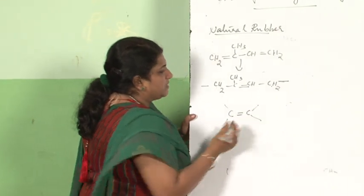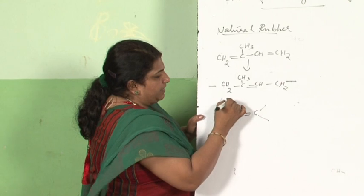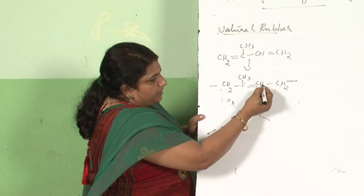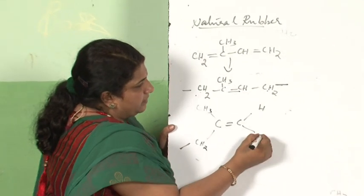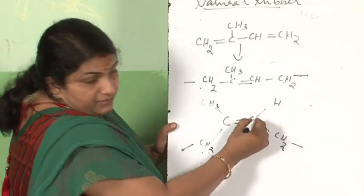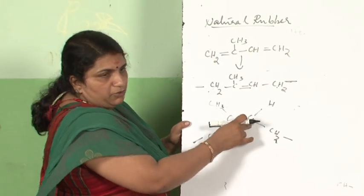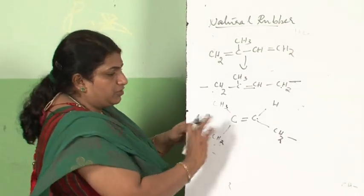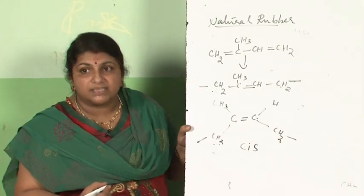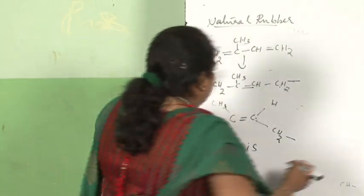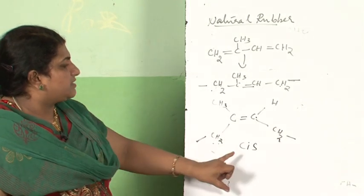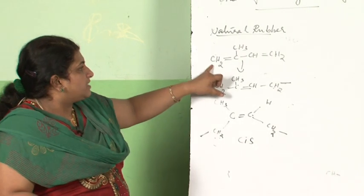As you know, cis and trans forms arise in doubly bonded compounds — triple bonds cannot show this isomerism. If similar groups are on the same side of the double bond, we call it cis isomer; if on the opposite side, we call it trans isomer. Natural rubber is a cis polymer — specifically a polymer of cis isoprene.